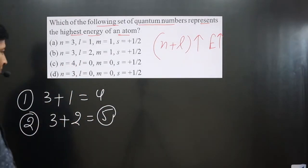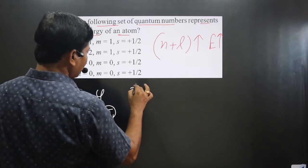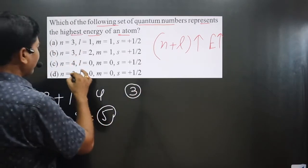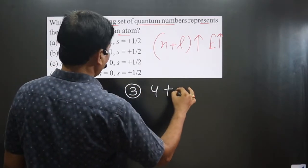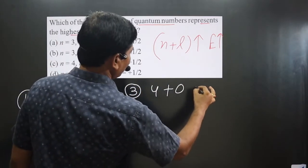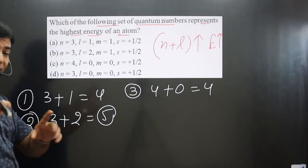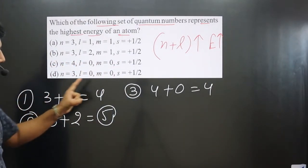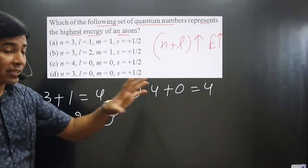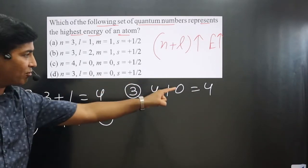For the third option, n equals 4 and l equals 0, giving us 4. Now, the first set and the third set both have the same n plus l value of 4.